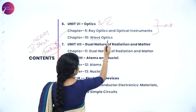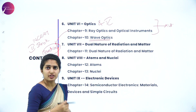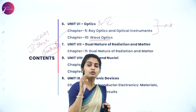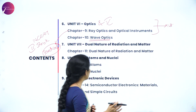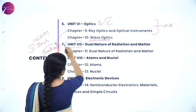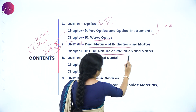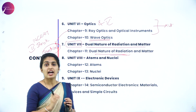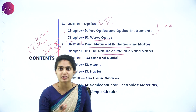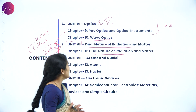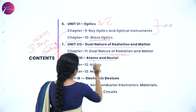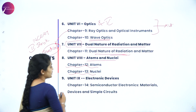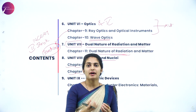Chapter 10 covers Wave Optics, studying the wave nature of particles. Unit seven deals with the Dual Nature of Radiation and Matter — very simple, small, and easily understandable — where we study light particle behavior. Next, we have Atoms and Nuclei: Chapter 12 is Atoms, and Chapter 13 is Nuclei, both dealing with atomic-level particles.